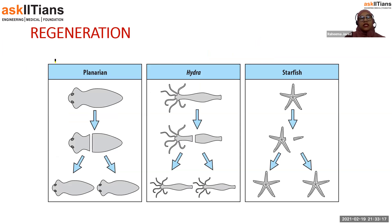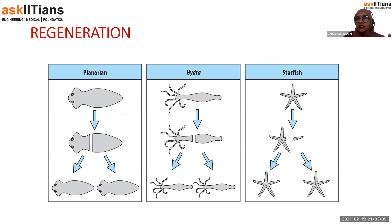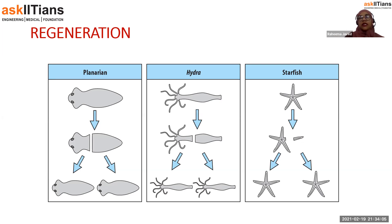Some people regard regeneration as a form of fragmentation — where the body gets fragmented and each part can develop into a new individual. But in regeneration, we are specifically talking about animals whose bodies get accidentally divided. Will the animal die? No. Each part of the body is capable of developing into an adult. This process is known as regeneration.